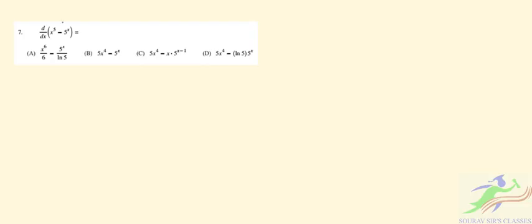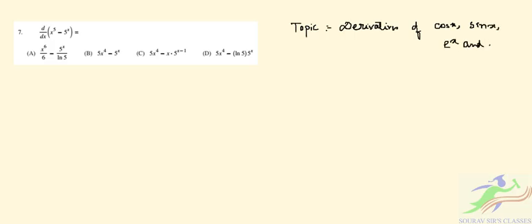Question 7: we have to find the derivative of x⁵ − 5ˣ. The topic is derivatives of standard functions including cos x, sin x, eˣ, and ln x. By the power rule, the derivative of x⁵ is 5x⁴.